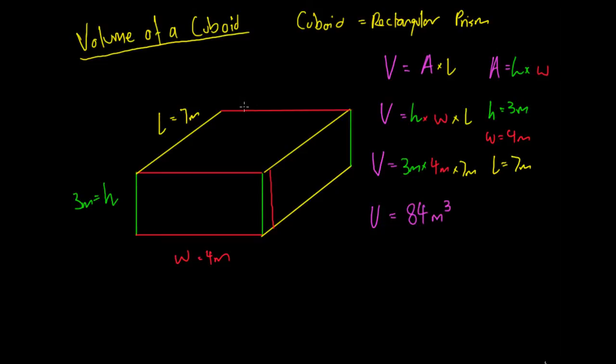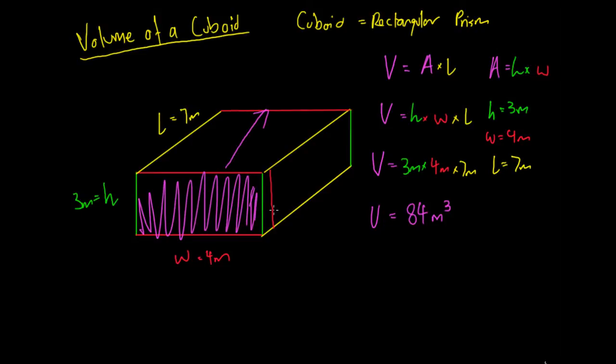So that is how we work out the volume of a cuboid. It's just the area of the face. And because the area of the face is constant throughout the shape, we just multiply the area of the face by the length. And that's going to tell us the volume of the shape.